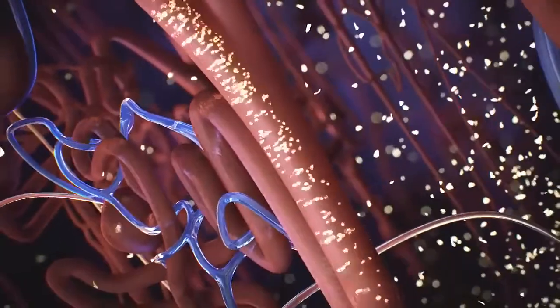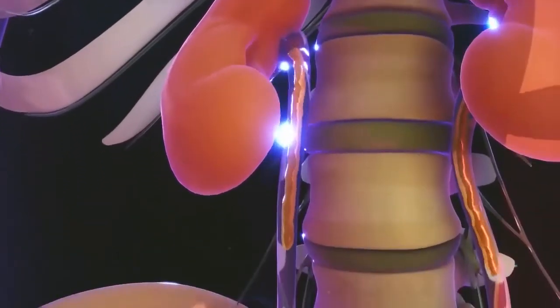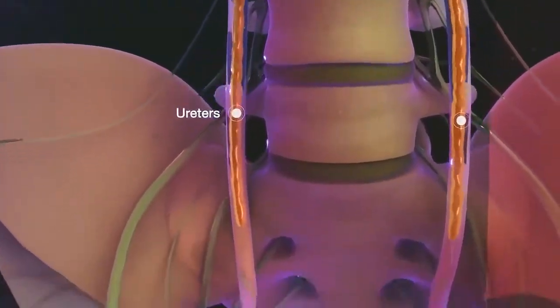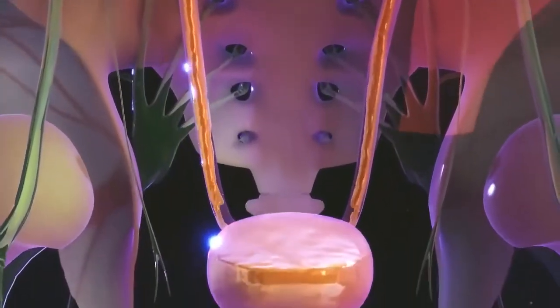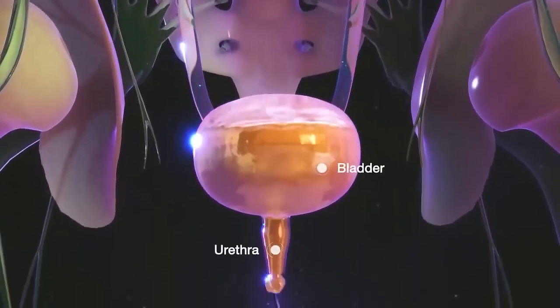The inner layer of the kidney is called the medulla, and urine drains into the collecting ducts. Urine drains through the ureters, the tubes connecting each kidney to the bladder, and then through the urethra, the tube that leads outside of the body.